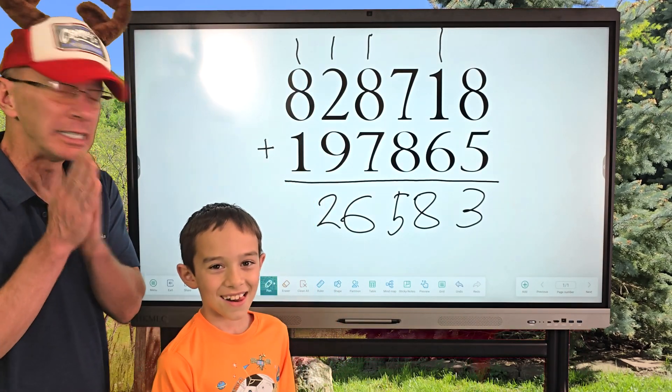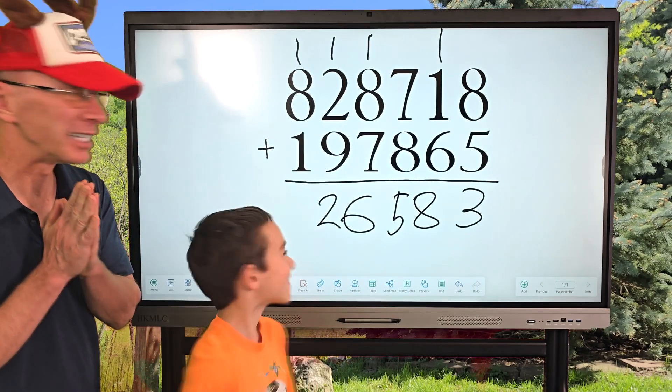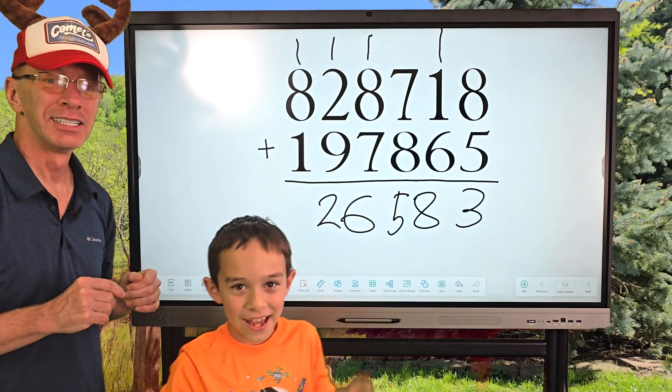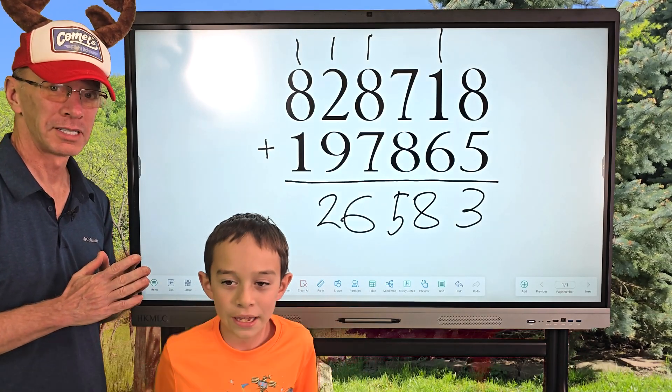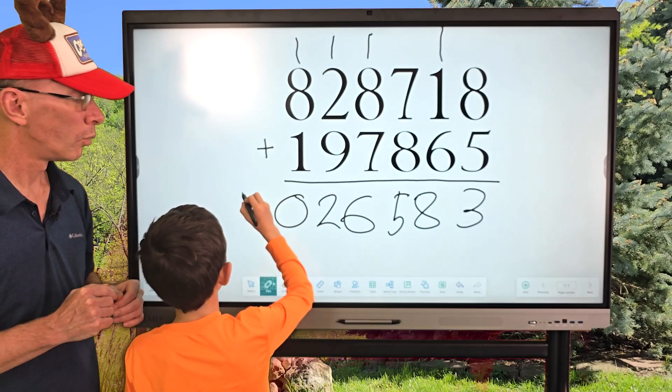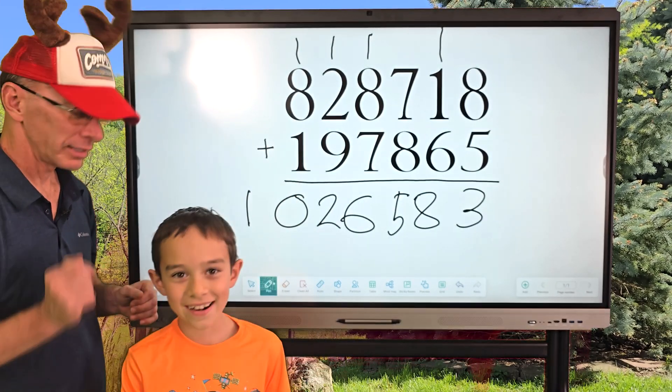My young Jedi is getting, my math Jedi is learning here. I love it. And then 1 plus 8 equals 9, and 9 plus 1 equals 10. So you put the 0 right here, and then you put the 1 right there.